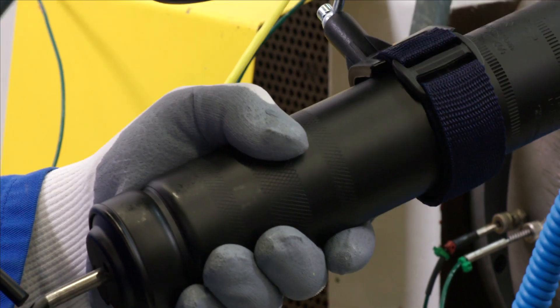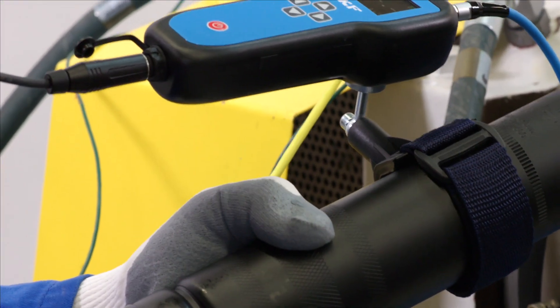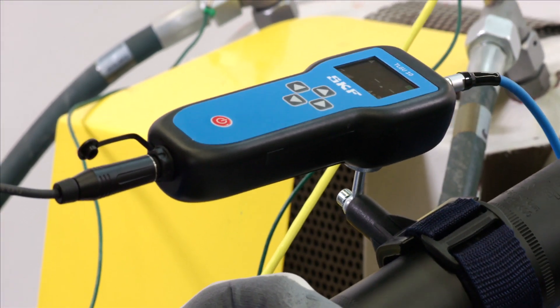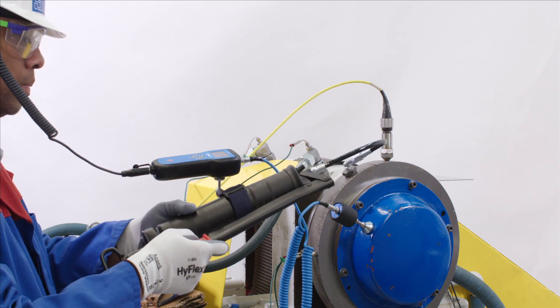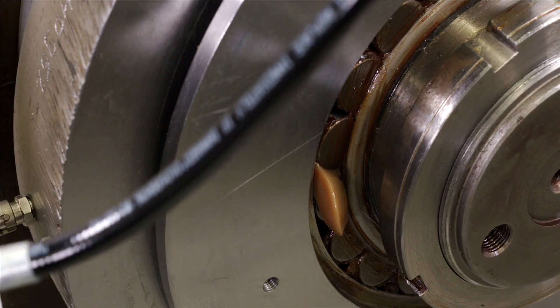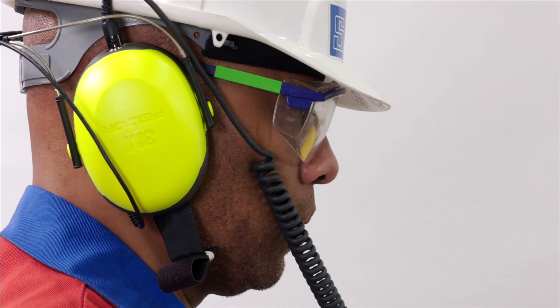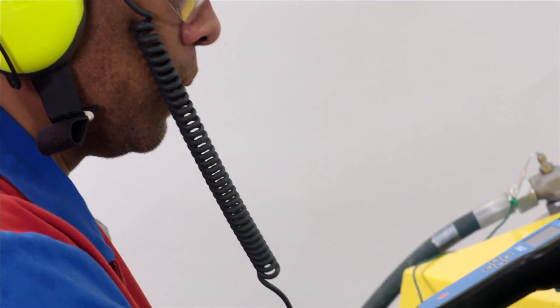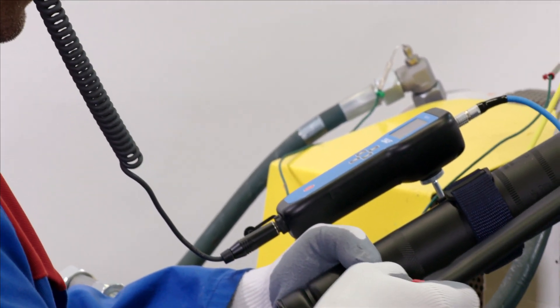This instructional video will show you how to use the SKF TLG-U10. The TLG-U10 uses an ultrasound sensor to monitor the sound of lubricant filling the bearing, and a combination of sound and a color visual display helps technicians re-lubricate with the right amount.